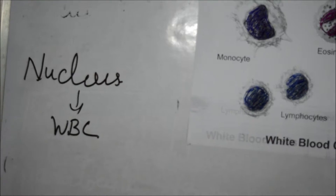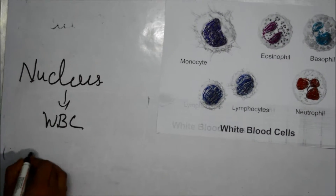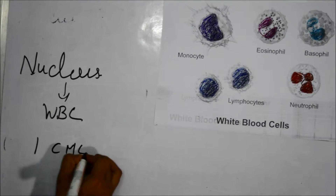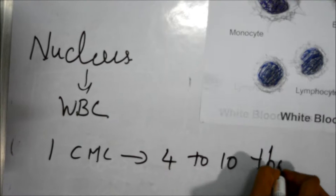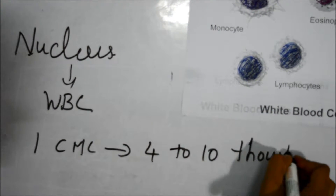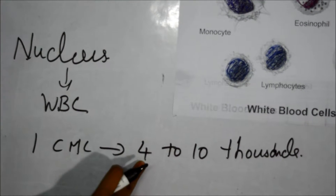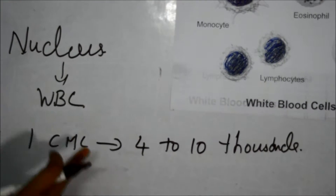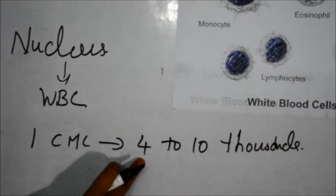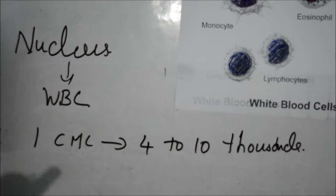Compared to red blood cells, the number of WBC are very less. For one cubic millimeter of blood, there are only four to ten thousand cells present. In RBC there are four point five to five point five millions of cells present in one cubic millimeter of blood, whereas in WBC there are only four to ten thousand blood cells present.